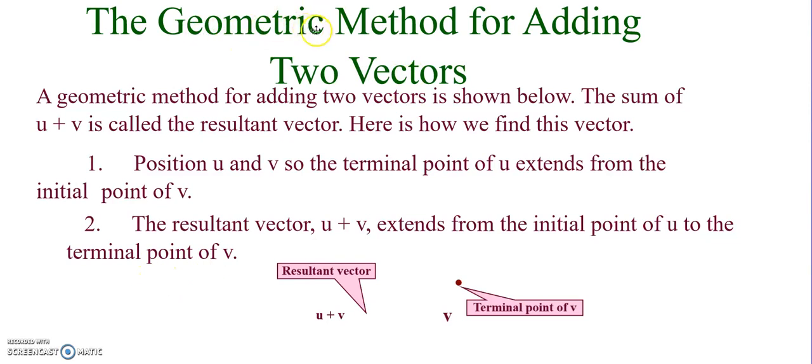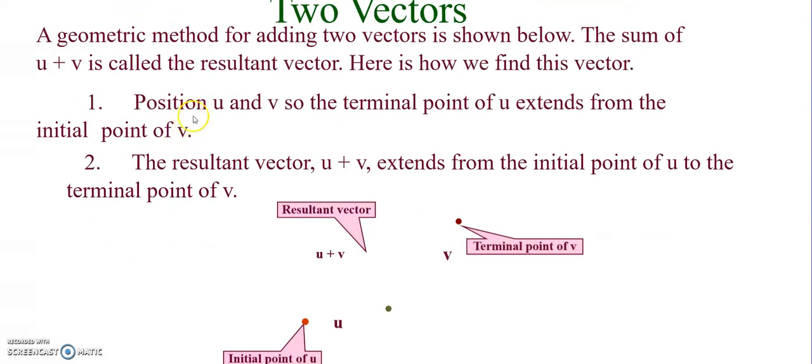If I have a geometric method for adding two vectors, it's going to be the sum of u plus v if I have some vector u and some vector v. So what's this going to look like?